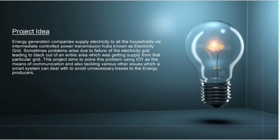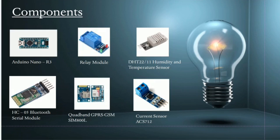Using IoT as a means of communication and also tackling various other issues which the smart energy system can deal with to avoid unnecessary loss. Components used: Arduino Uno, relay module, humidity and temperature sensor, Bluetooth serial module, GSM, current sensor.